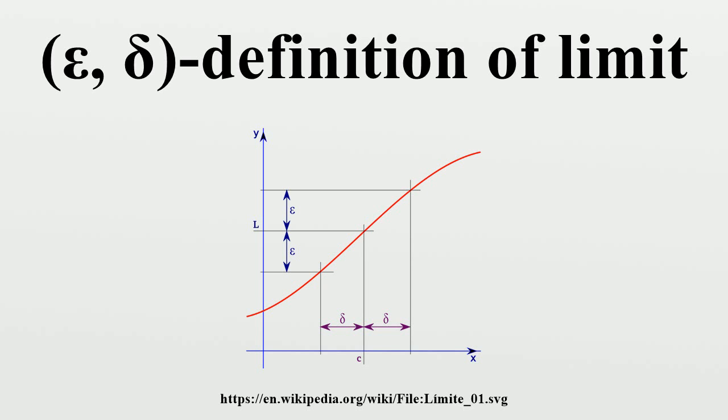For such functions, delta can be understood as the radius of a circle or sphere, or some higher-dimensional analogy, centered at the point where the existence of a limit is being proven in the domain of the function, and for which every point inside maps to a function value less than epsilon away from the value of the function at the limit point.